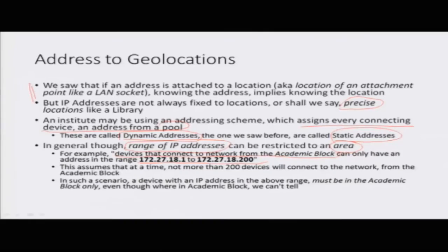We don't know exactly where in the academic block the device is, but we know it is from the academic block. So a device with a particular IP address can still be located — not precisely, but within a particular block or building. What we have done is the mapping at a much higher level: instead of doing it for a particular socket, we are doing it for a building or block.